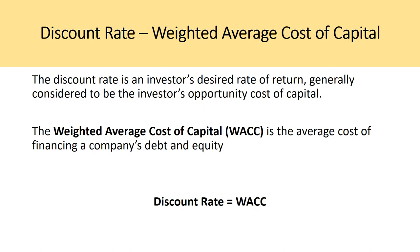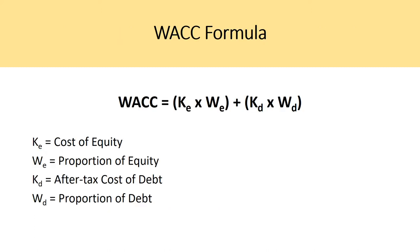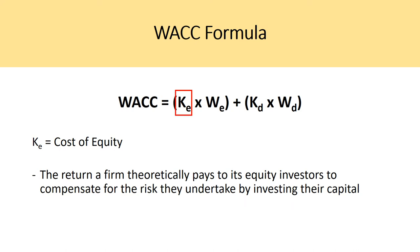Throughout my videos I will be referring to the discount rate as the weighted average cost of capital. To calculate WACC, you multiply the cost of equity by the proportion of equity (the market value of equity divided by total market value of capital), plus the after-tax cost of debt times the proportion of debt relative to total market value of capital. In this video we're going to be focusing on the cost of equity.